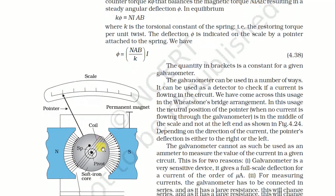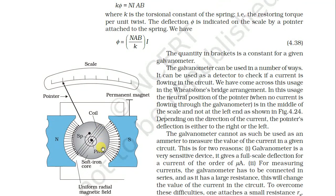The quantity in brackets is constant for a given galvanometer. The galvanometer can be used in a number of ways. It can be used as a detector to check if current is flowing in the circuit — we come across this in the Wheatstone bridge arrangement. In this use, the neutral position of the pointer when no current is flowing is at the middle of the scale.